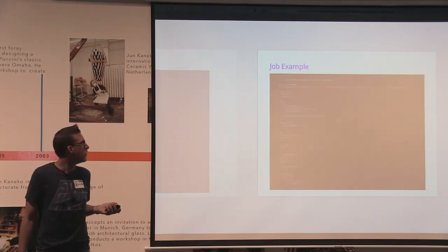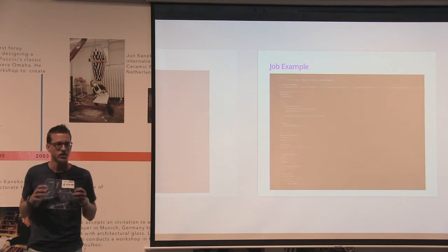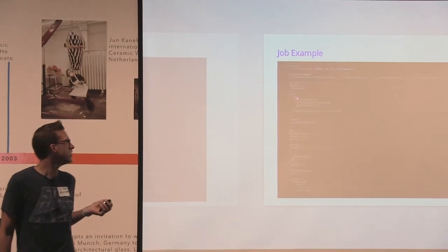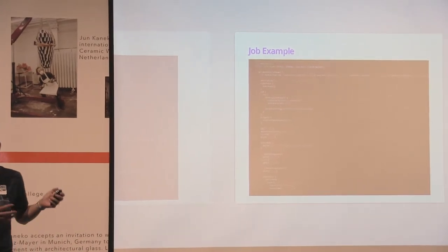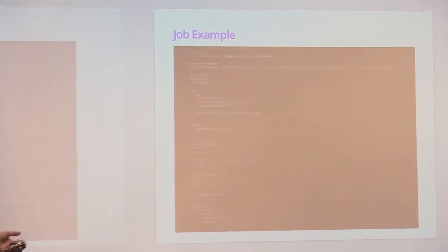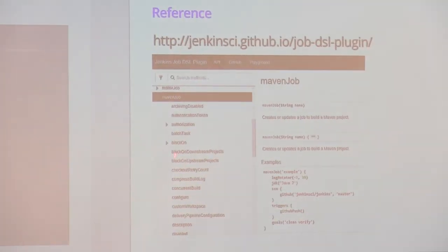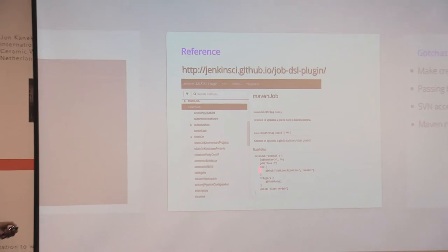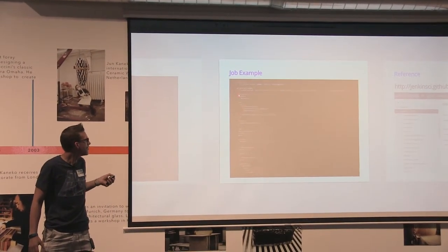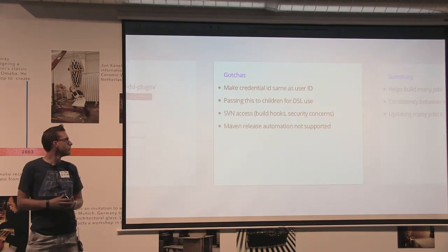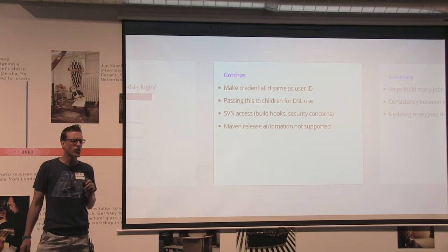Another gotcha: the child scripts that actually create the Jenkins jobs require 'dsl' as their first parameter. You pass 'this' as that first parameter when calling the function, which gives it access to the Job DSL context — allowing you to call 'dsl.mavenJob()' and so on. We also had some growing pains with SVN access on the first project.